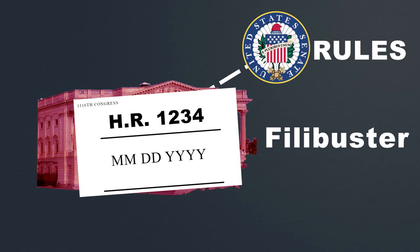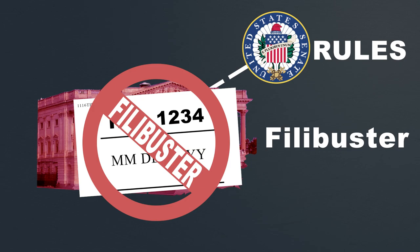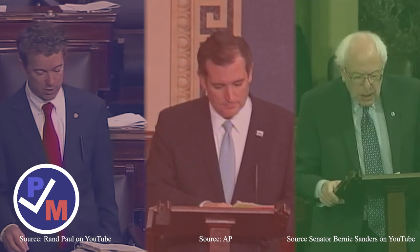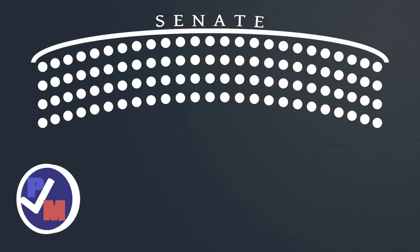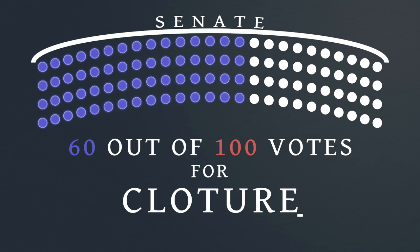Typically, this tactic is when a senator refuses to end debate by getting up and speaking for as long as they want in order to prevent a bill from coming to a vote. If those opposing a bill refuse to stand down and stop their filibuster, it can be stopped if 60 out of 100 senators decide to end debate and come to a vote. This is what is called cloture.